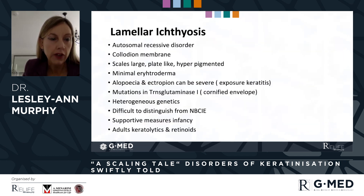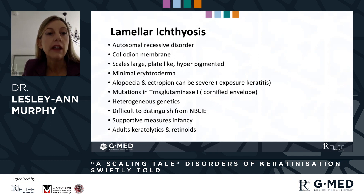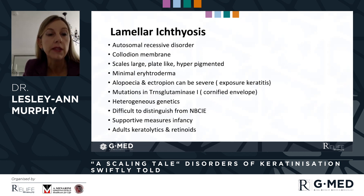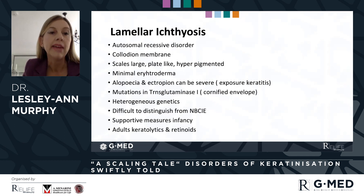Lamellar ichthyosis, by contrast, is inherited as an autosomal recessive disorder. Affected babies present with collodion membrane, and as the collodion membrane is shed, scales replace it. They are very large and plate-like, hyperpigmented, centrally attached, detaching peripherally with deep fissuring. The extent of erythroderma is considered usually minimal. But alopecia and ectropion in these affected individuals can be severe, even resulting in exposure keratitis. It is acquired as a consequence of transglutaminase 1 mutation affecting the integrity of the cornified envelope, but its genetics are considered heterogeneous.